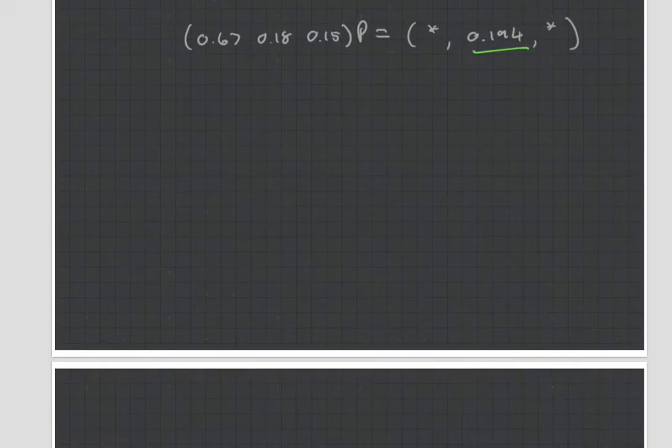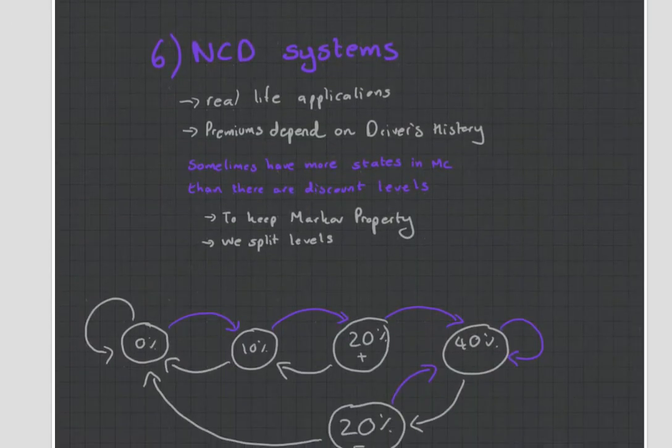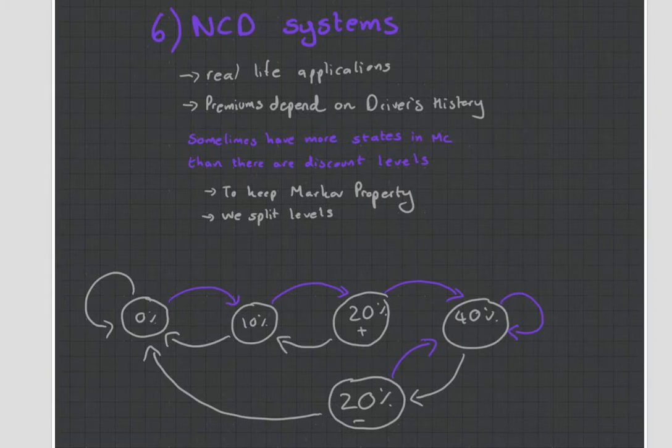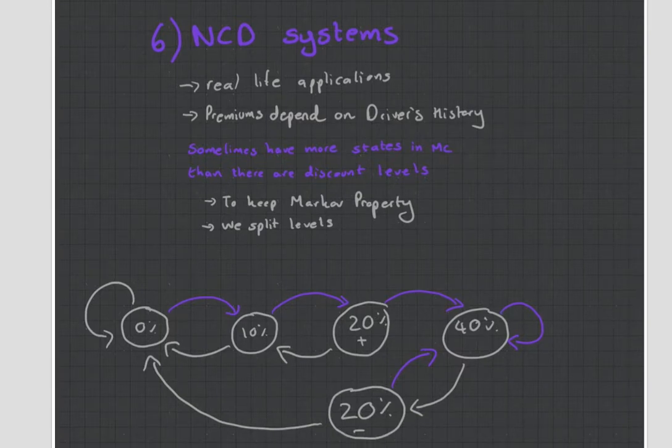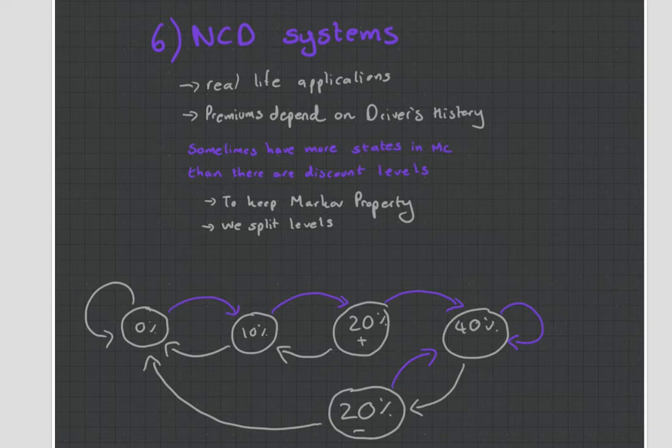And why do actuaries care about this? The reason being is this thing has got so many applications. But one of the most common applications that you're going to see in the exam, it's this thing known as a no-claim discount system. And what insurance companies do is they don't know how good you are as a driver. When you present them with your license, they don't say, oh, this person's a super driver or this person's a bad driver. No, you're either a driver or you're not a driver.